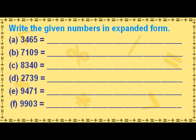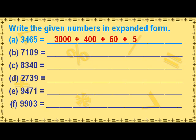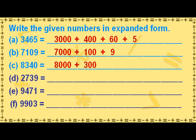Write the given numbers in expanded form. The number 3465 can be written in expanded form as 3000 plus 400 plus 60 plus 5. The number 7109 can be written in expanded form as 7000 plus 100 plus 9. The number 2739 can be written in expanded form as 2000 plus 700 plus 30 plus 9.